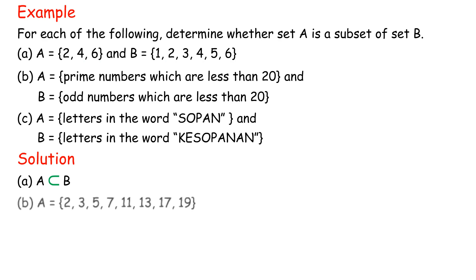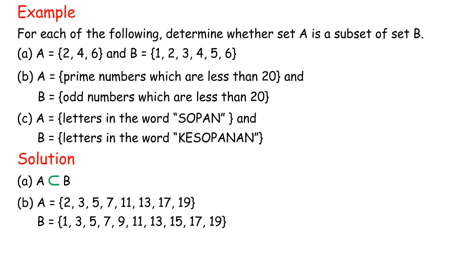B: A = {prime numbers less than 20} and B = {odd numbers less than 20}. A = {2, 3, 5, 7, 11, 13, 17, 19}, B = {1, 3, 5, 7, 9, 11, 13, 15, 17, 19}. Element 2 is not in B, thus A is not a subset of B. C: A = {letters in the word Sopon} and B = {letters in the word Cursopanon}. Every element of A is found in B, so A is a subset of B.